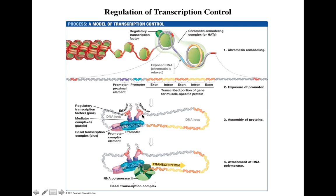Here is a clear example. An activator transcription factor has two key domains: a DNA binding domain, which interacts with the DNA, and a transcription activation domain, which interacts with other proteins — either directly with transcription factors or with mediator proteins. So at one end the transcription factor binds DNA; at the other end it interacts with different proteins.